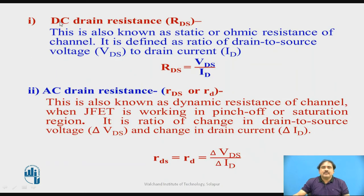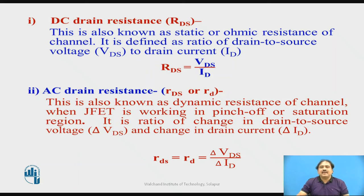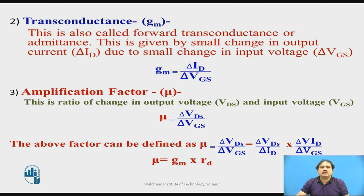The second parameter is transconductance, which is the ratio of the change in output current to the change in input voltage. The output current is ID and the input is voltage VGS, so transconductance gm = ΔID / ΔVGS.